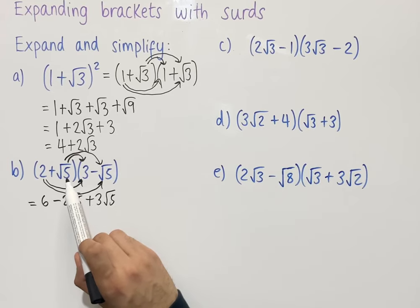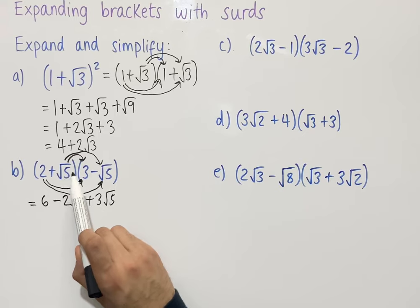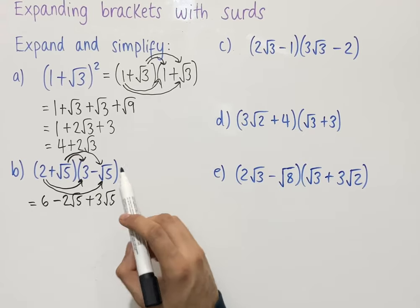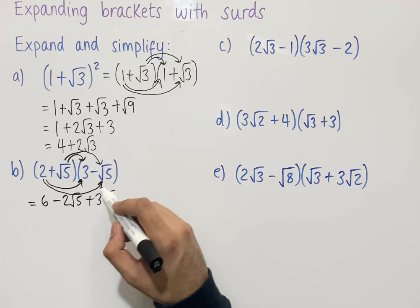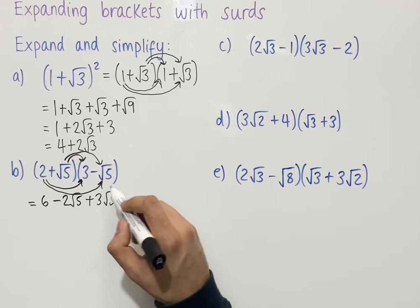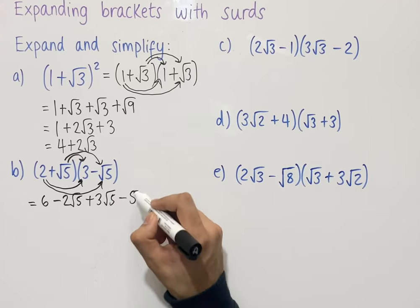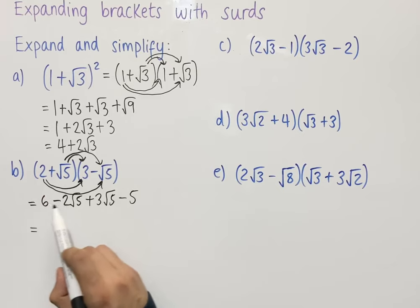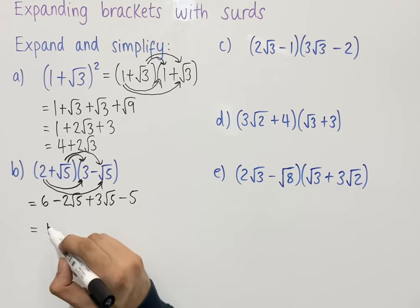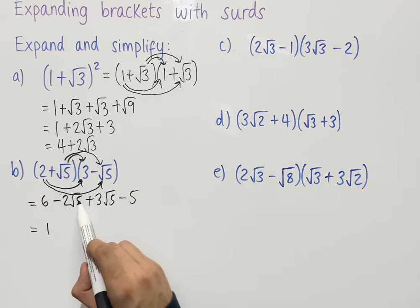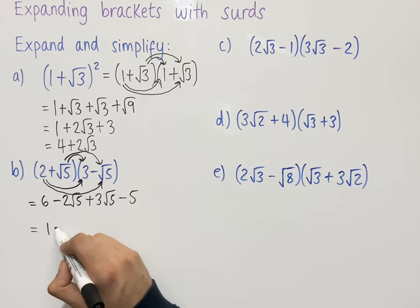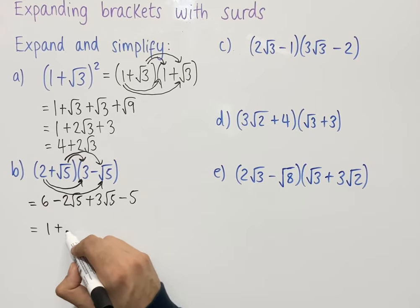When multiplying two surds with the same number inside, we just end up with that number. So root 5 times minus root 5 is minus 5. Collecting like terms: 6 minus 5 equals 1, and minus 2 root 5 plus 3 root 5 gives root 5. So our answer is 1 plus root 5.